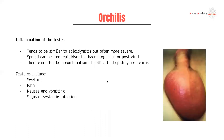Next, we have orchitis, which is inflammation of the testes. It tends to be quite similar to epididymitis in its presentation, but usually more severe. You can have orchitis as a complication of epididymitis, but also hematogenous or post-viral infections and inflammation. You can also have a combination of both, called epididymo-orchitis. Features include swelling, pain, nausea, vomiting, as well as signs of systemic infection.